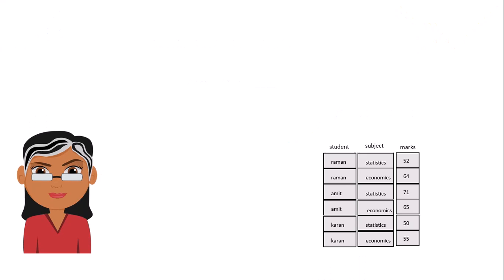You can visualize it very easily. Suppose you want to know the average marks of the students — how much, in a general way, students get marks in your class. For that you have to select the marks column, and for doing that we have a select function available in dplyr by which you can select any column or variable — student column, subject column, or marks column.